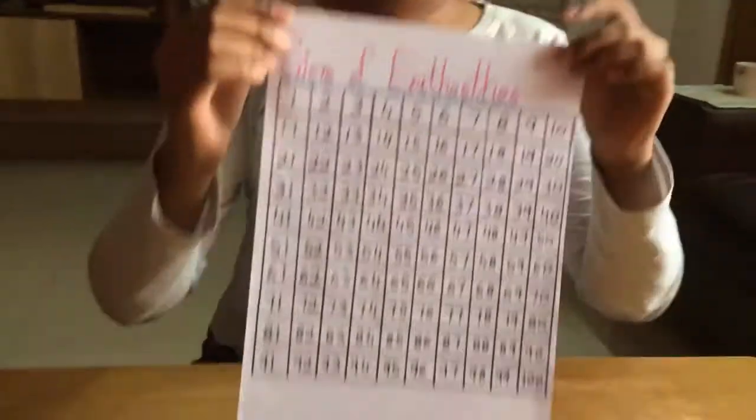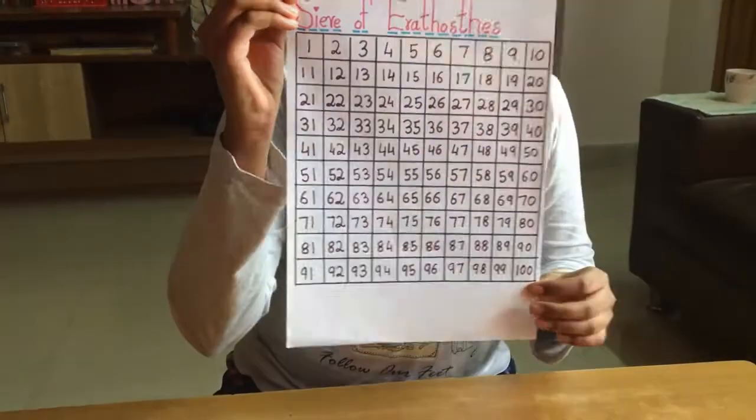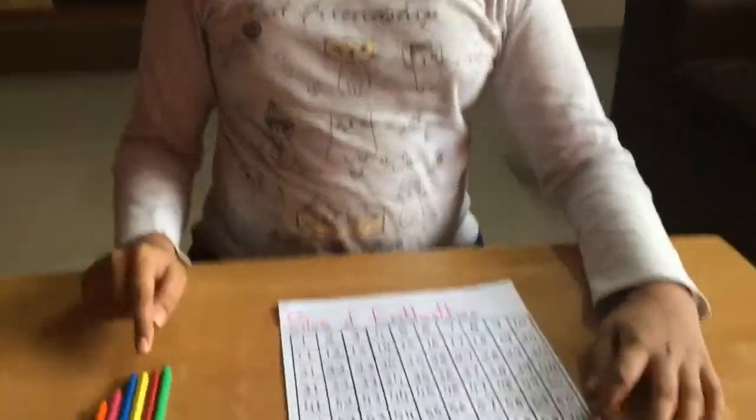It is basically an ancient algorithm of finding prime numbers. I took a chart with numbers from 1 to 100 in grid and I took 6 crayons.